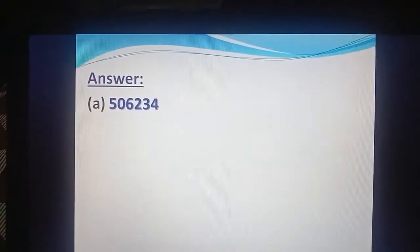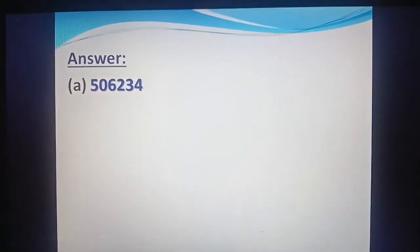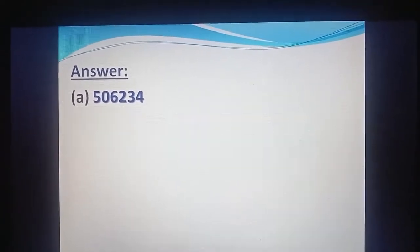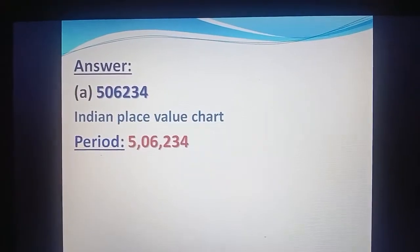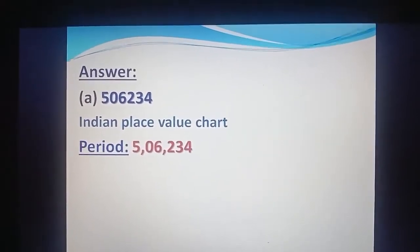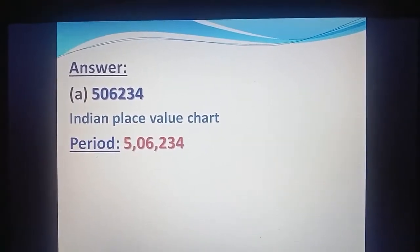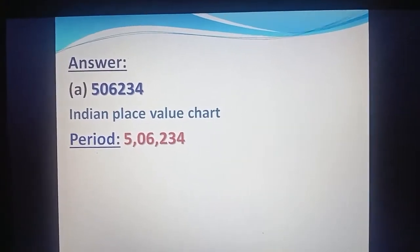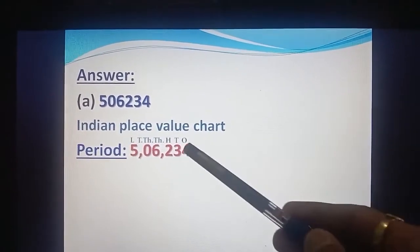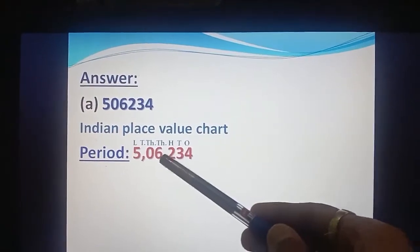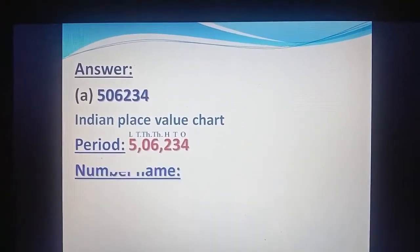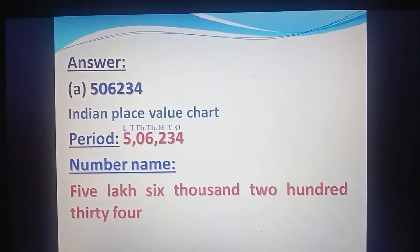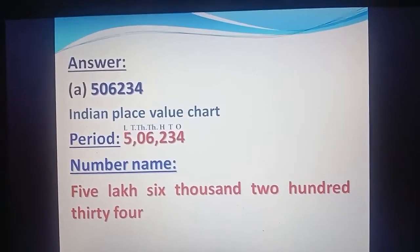Answer of A part, that is 506234. First, we write the number name using the Indian place value chart. We divide according to its period: 5,06,234, and assign places — ones, tens, hundred, thousand, ten thousand, and lakh. So its number name is five lakh six thousand two hundred thirty-four.